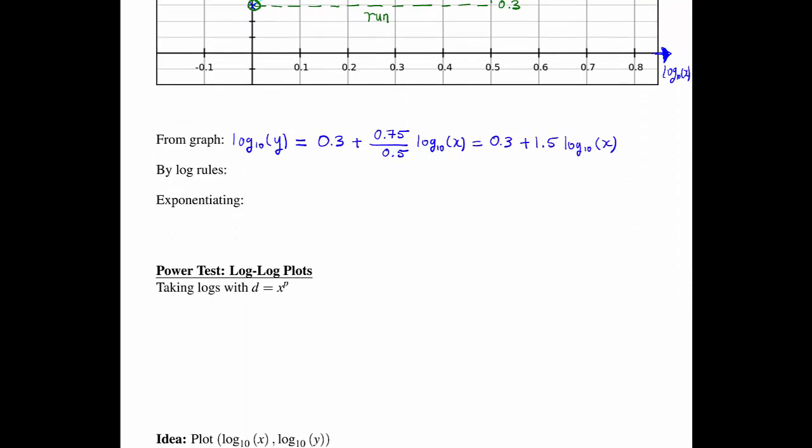How do we get back? We exponentiate. We first want to do a log rule. So we can simplify the 1.5 log of x. We can bring that 1.5 and put it as a power of x by that third log rule. And then we exponentiate. If we exponentiate, what we get is on the left, we get y. And then we get 10 to the 0.3 for that first term, and that's going to turn out to be very close to 2. And then we're going to get 10 to the log base 10 of x to the 1.5. By the cancellation identities, the 10 to the power of log base 10 just cancel. So our final relationship is 2 times x to the 1.5.